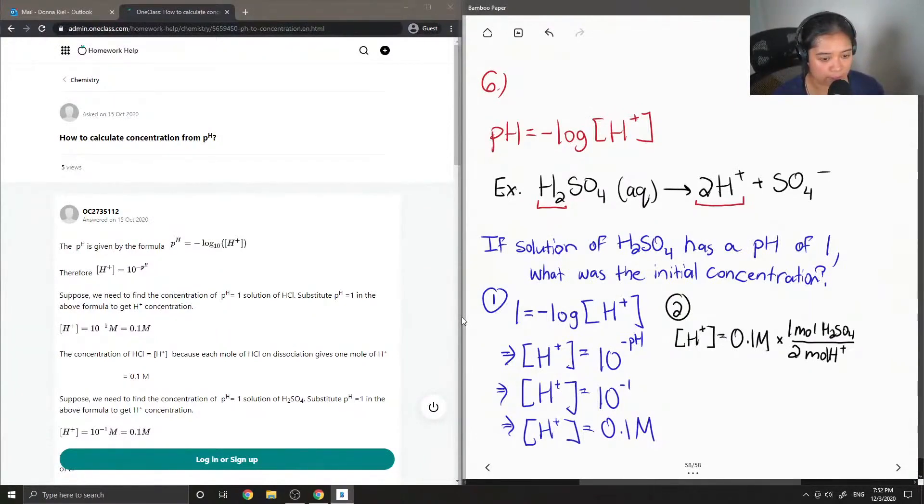So, if we divide the concentration of H+ by 2, this can give us the moles or the concentration of H2SO4, which is 0.05 molar.